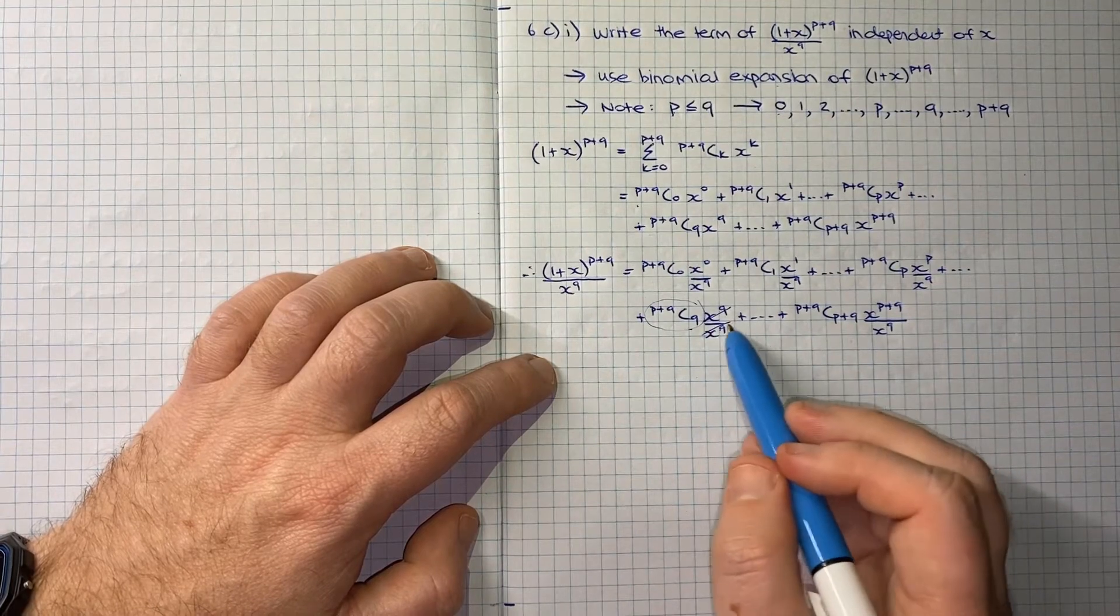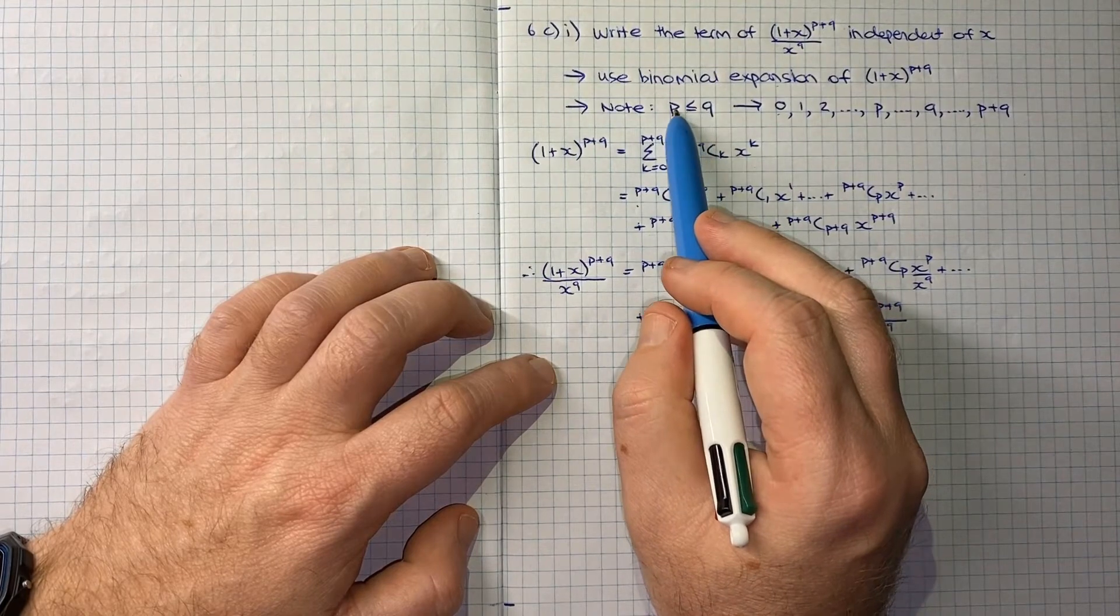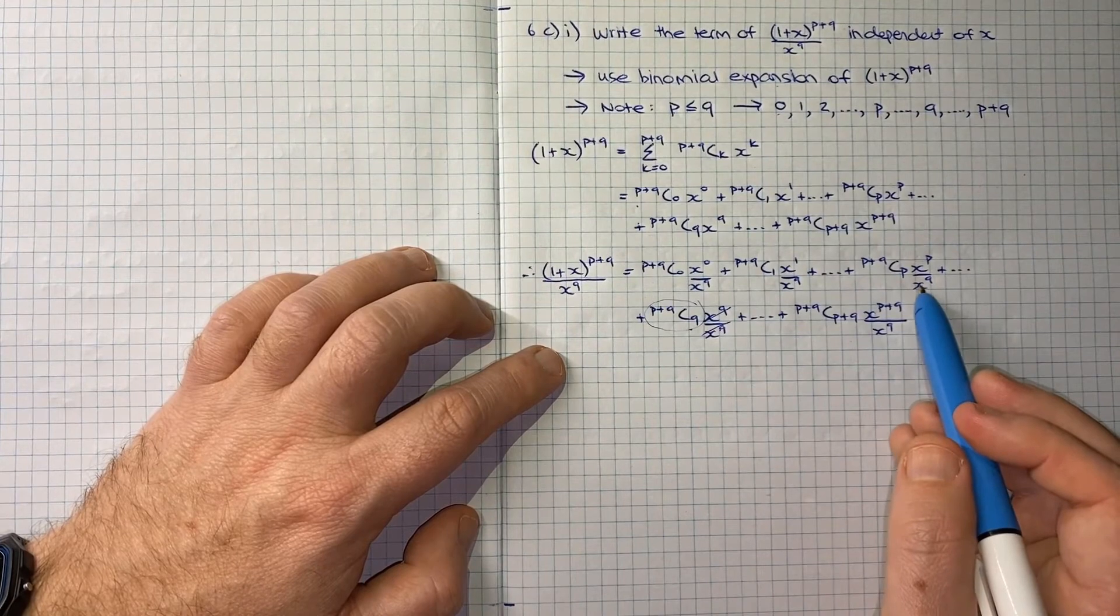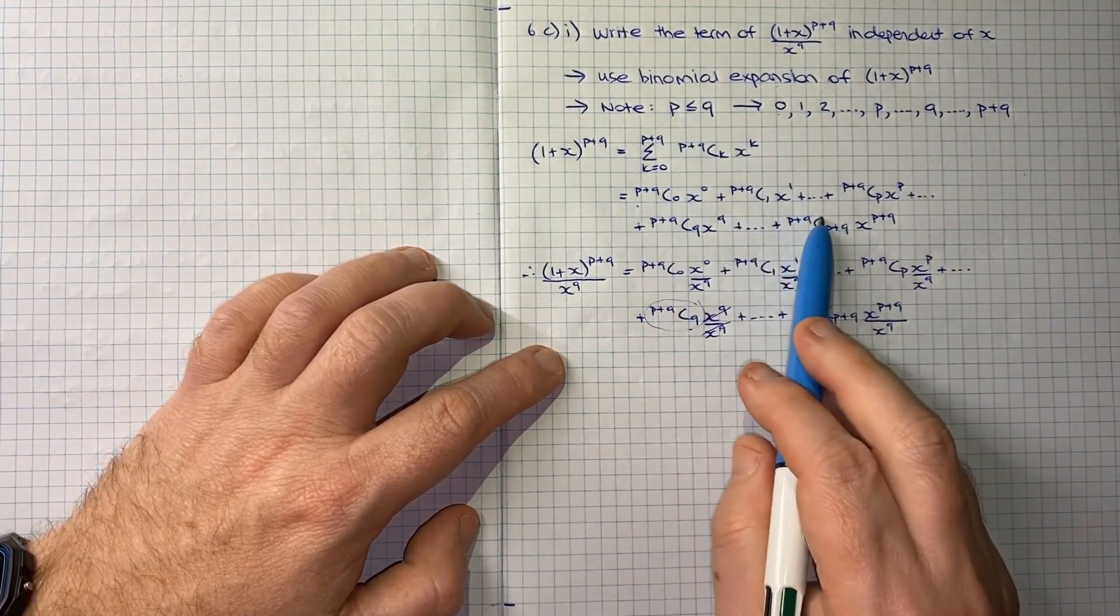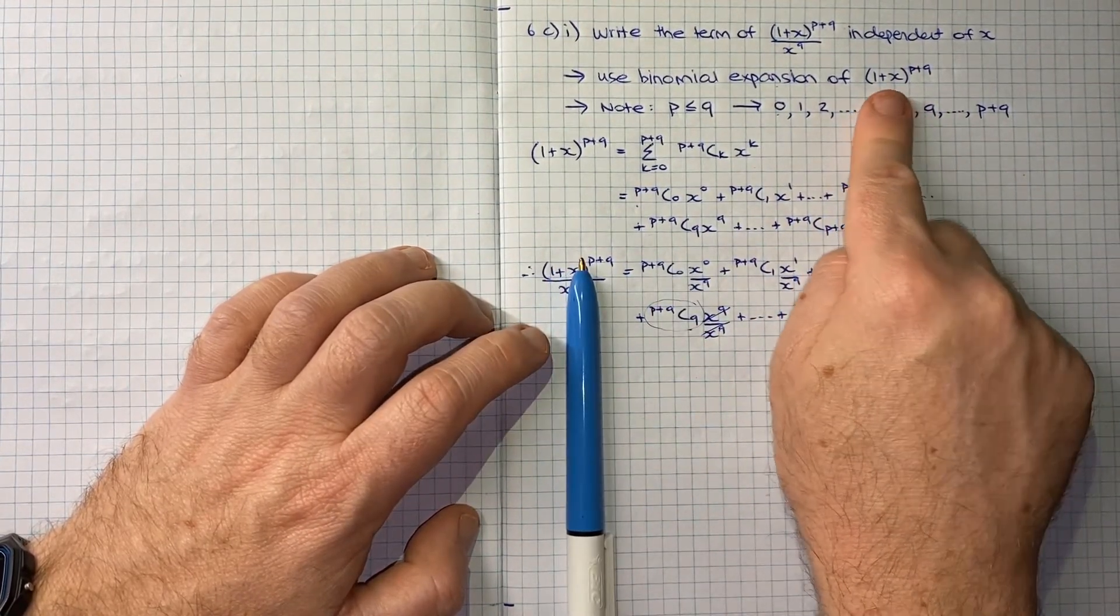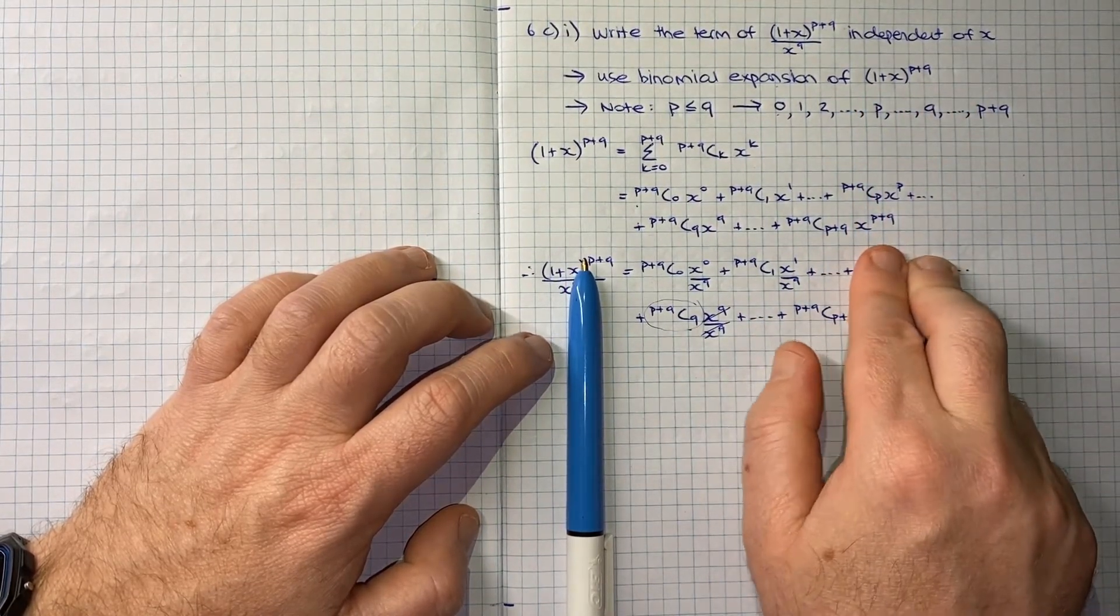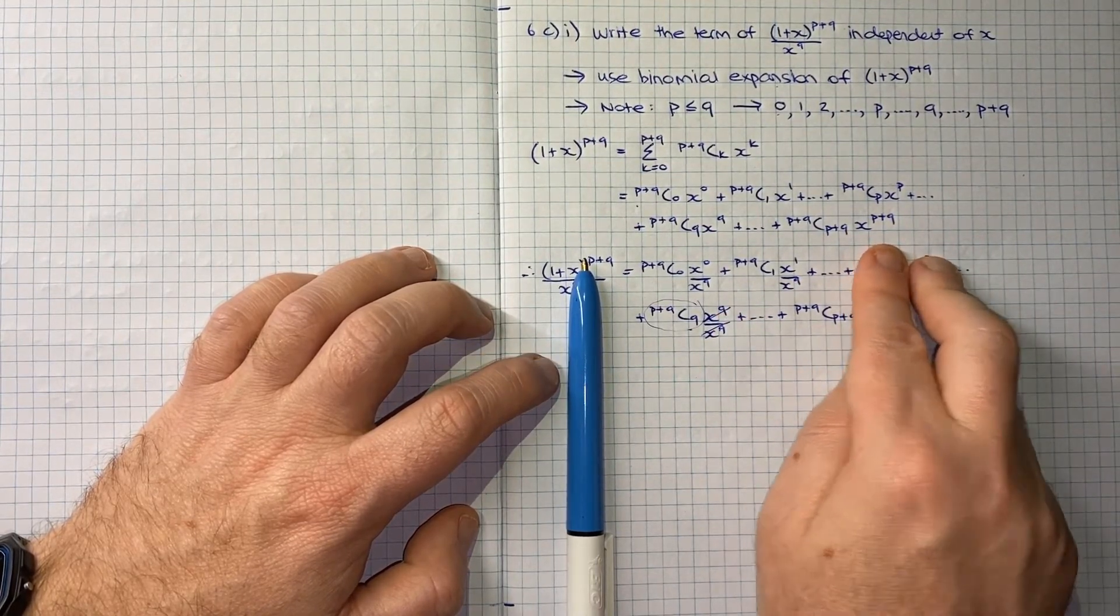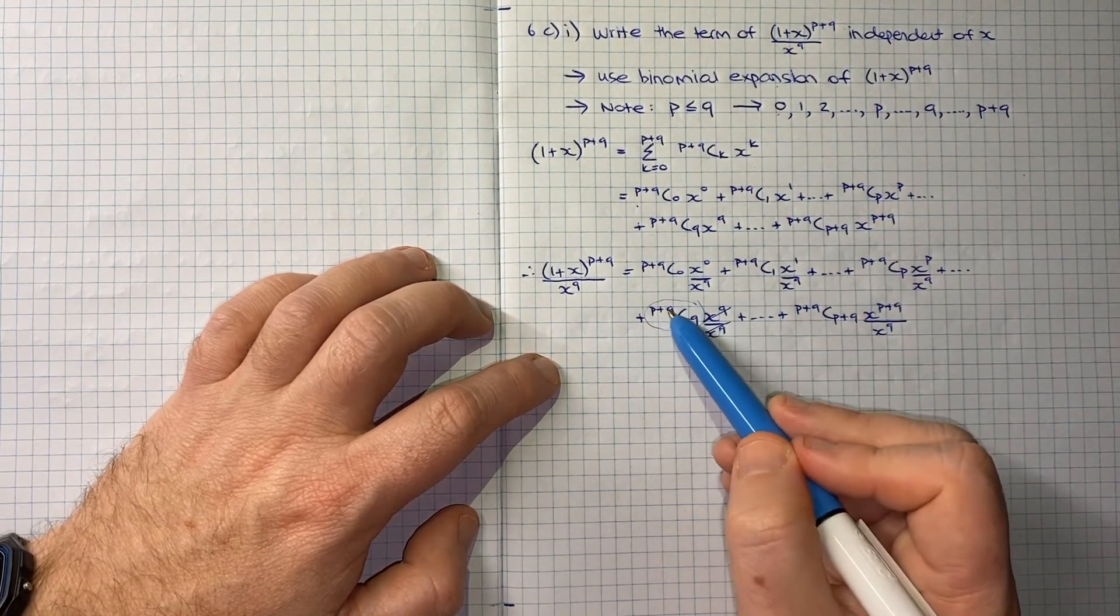It's worth pointing out for completeness that p can be equal to q because p is less than or equal to q. But in that case we're still okay because if p equals q, then you can think of that as just being no p on the way because p is q, so they're one and the same. You'll still end up with x^q over x^q leaving just the one independent term, which is (p+q choose q).